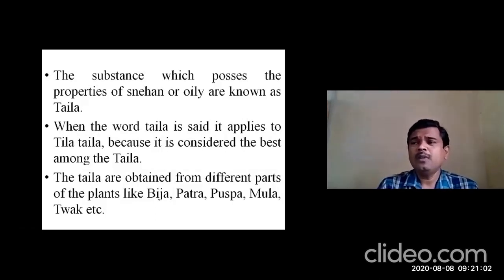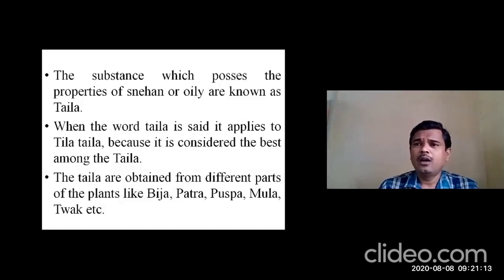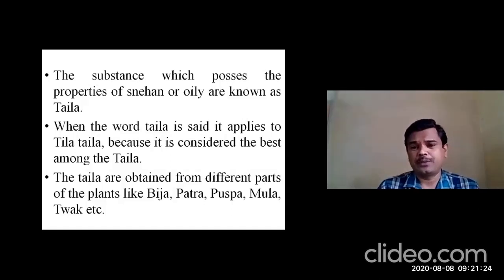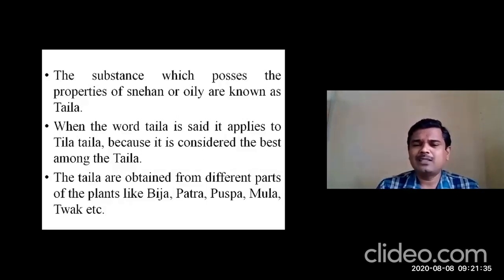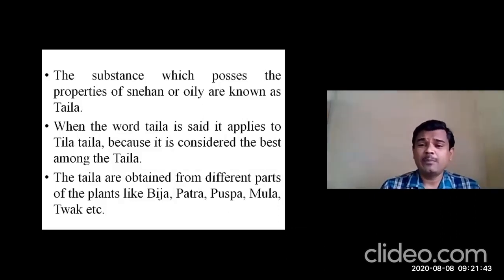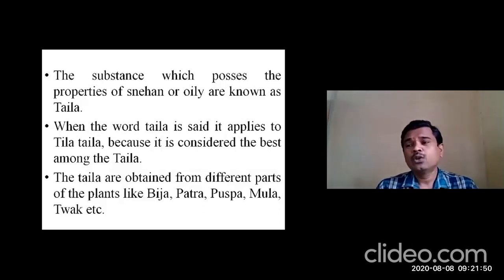Apart from seeds, some Thailas are obtained from leaves — for example Thailaparana, whose name indicates oil glands present in the leaves. If you squeeze it, you can feel the volatile oil present in the leaves. Flowers also contain these oils; for example, Lavanga — when you take sections you can find the oil glands, and squeezing gives you oil. There are even fruits from which we extract oils.